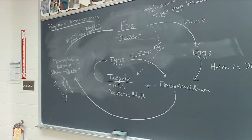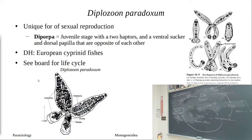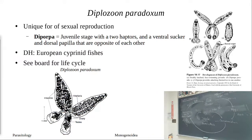Now Diplozoon paradoxum — our second species — and you can almost tell it's paradoxum because it's really weird. It has a unique form of sexual reproduction involving the development of a stage called the diporpa. A diporpa is a juvenile stage that possesses two haptors: a ventral sucker and dorsal papillae that are opposite each other. This parasite infects European cyprinid fishes.